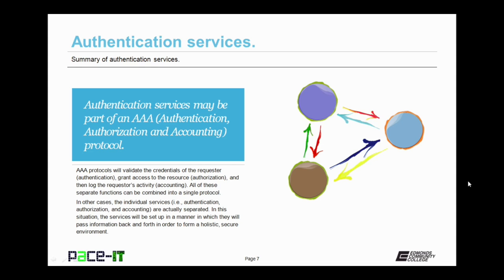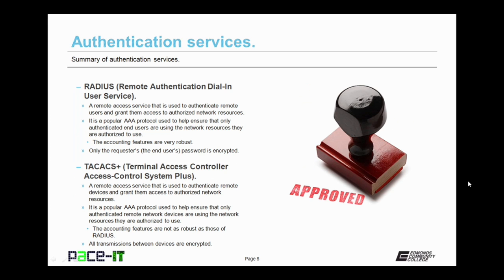First up is RADIUS — Remote Authentication Dial-In User Service. It's a remote access service used to authenticate remote users and grant them access to authorized network resources. It is a popular AAA protocol used to help ensure that only authenticated end users are using the network resources they are authorized to use. RADIUS has very strong and robust accounting features, but only the requester's password is encrypted. Everything else that flows through RADIUS is sent in clear text.